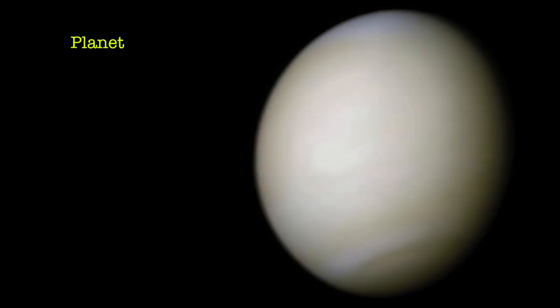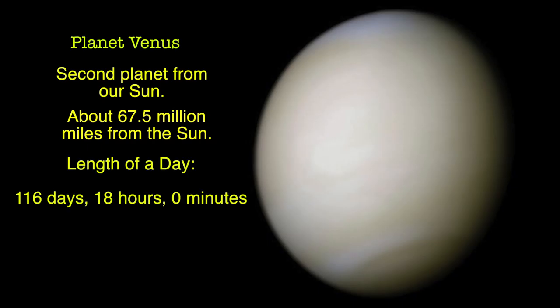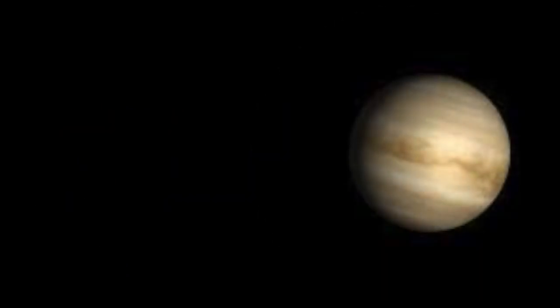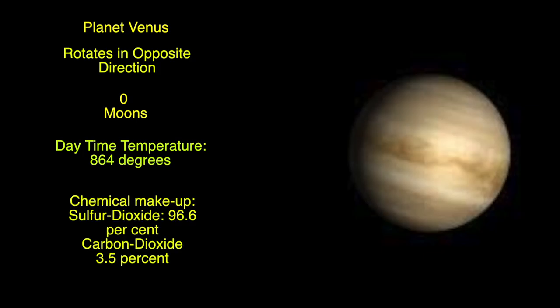We now travel to our next planet of our amazing solar system. Planet Venus, second planet from our sun, about 67.5 million miles from the sun. Length of a day: 116 days, 18 hours, and 0 minutes. Orbit of the sun: 224 days. Planet Venus rotates in the opposite direction and has zero moons. Daytime temperature: 864 degrees. Chemical makeup: sulfur dioxide 96.6%, carbon dioxide 3.5%.